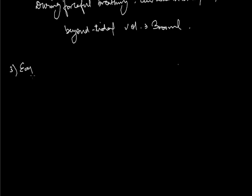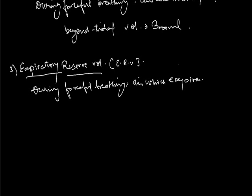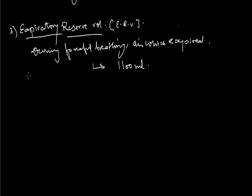Next is Expiratory Reserve Volume, or ERV — the opposite of IRV. During forceful breathing, this is the amount of air which is expired beyond normal. During forceful expiration, a person expires an additional 1100 ml of air beyond the normal tidal volume of 500 ml.